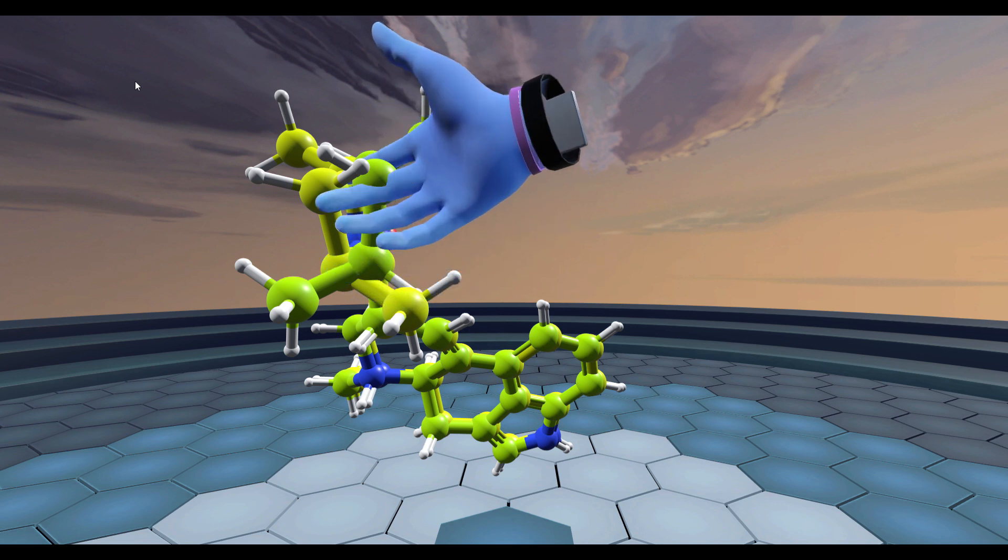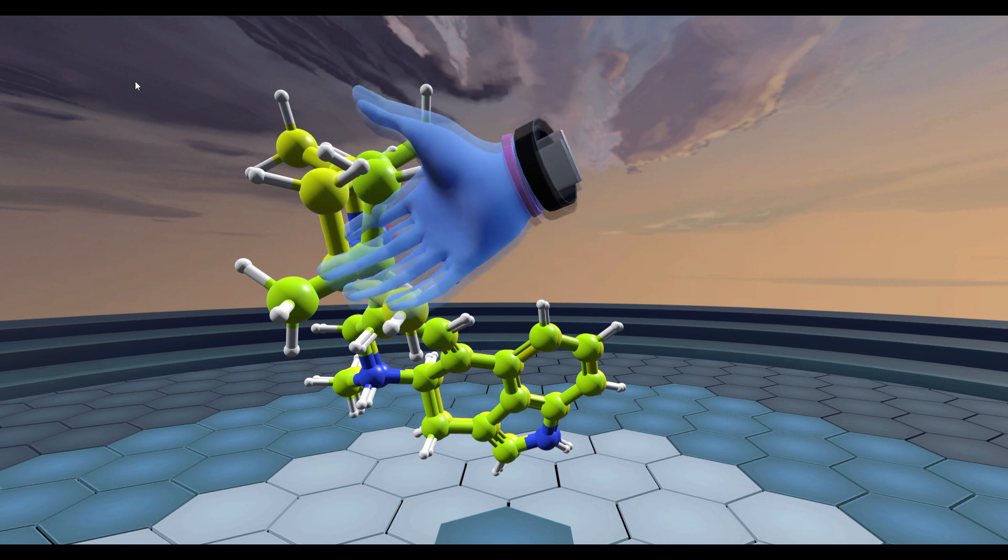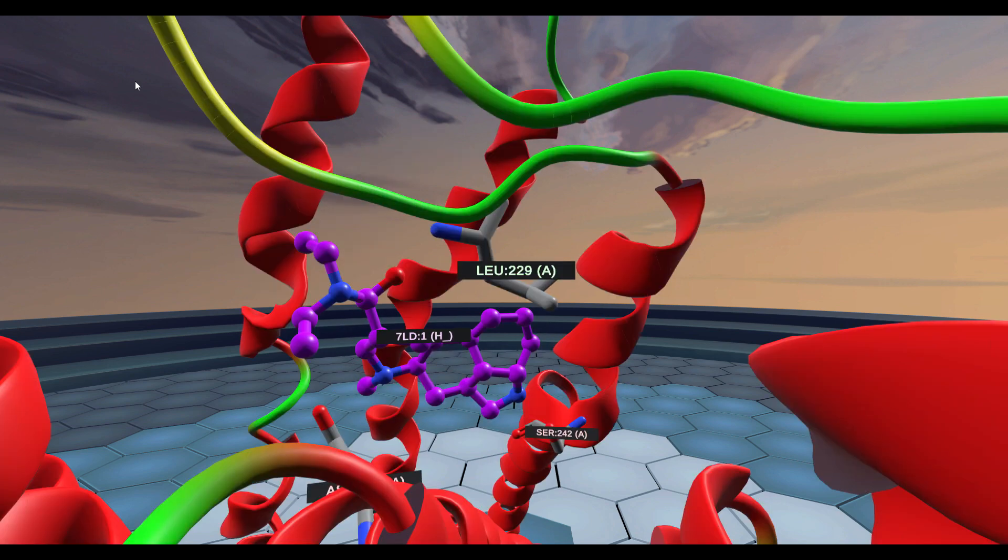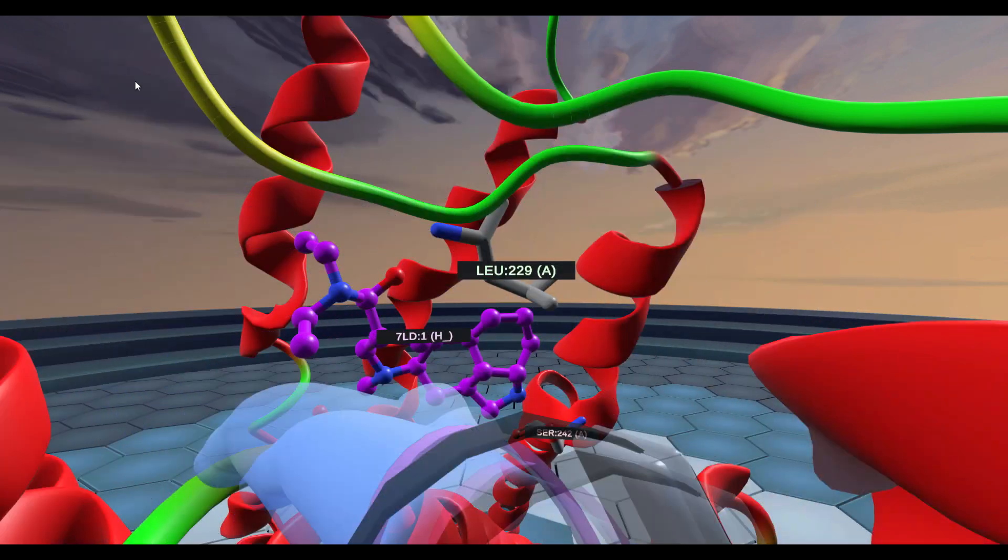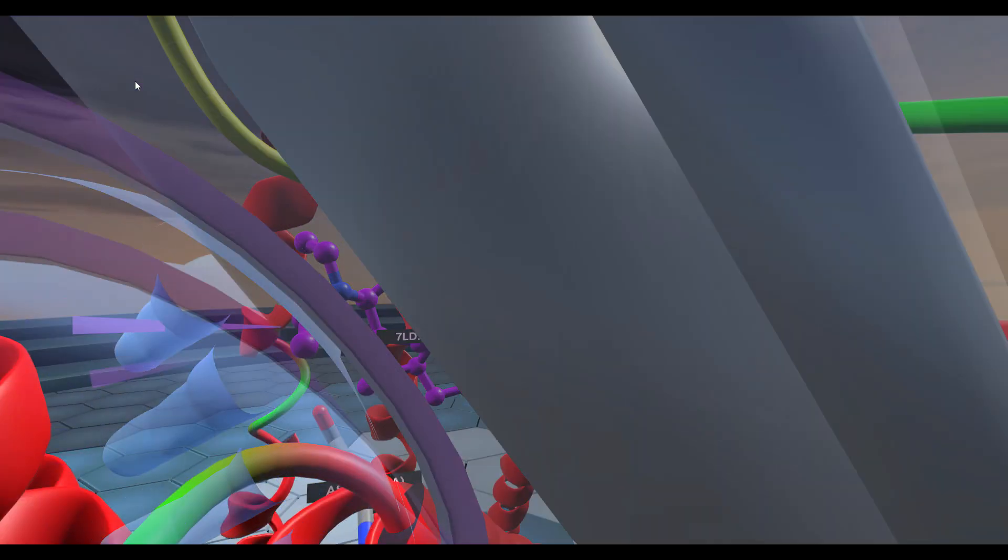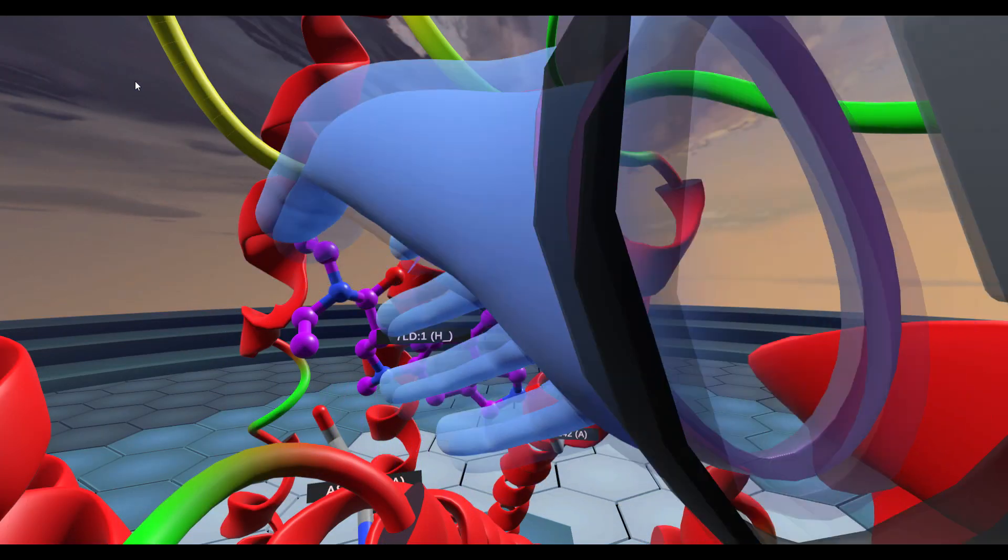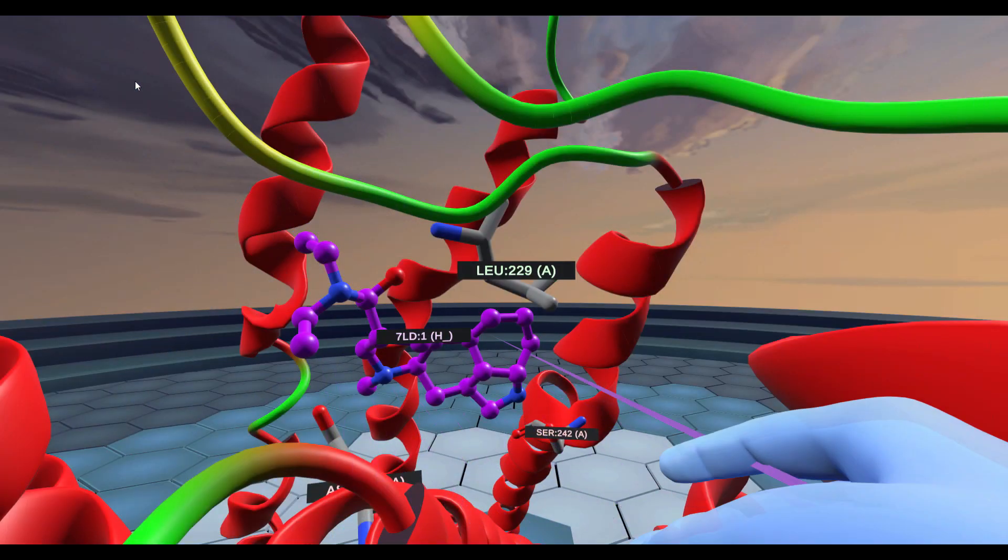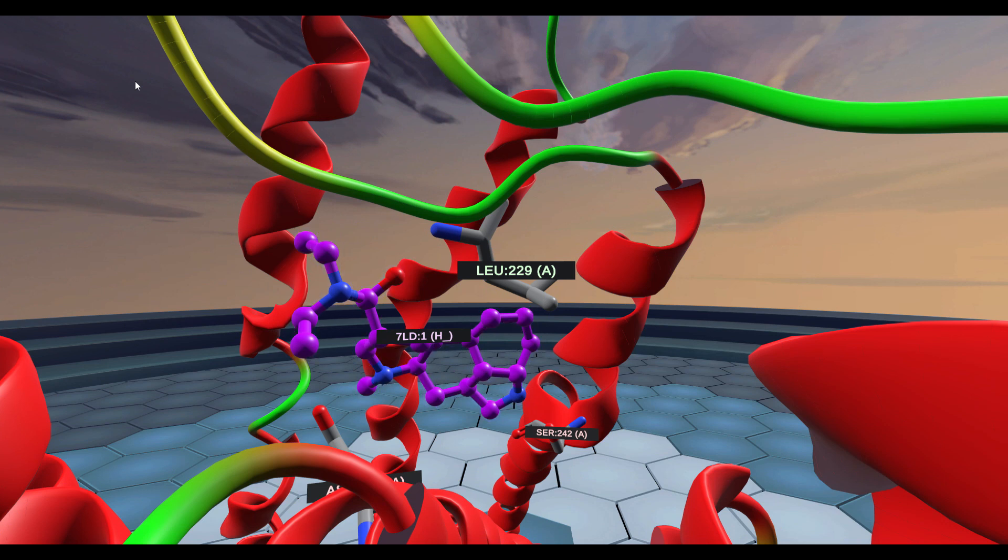Here's how he proves this. If we dock these compounds to the serotonin 2A crystal structure, here's what we would see in terms of how they dock. Once again we're looking back at LSD docked inside the crystal structure, and what we're going to do is dock those RR and SSAZ enantiomers to see which one looks like LSD.